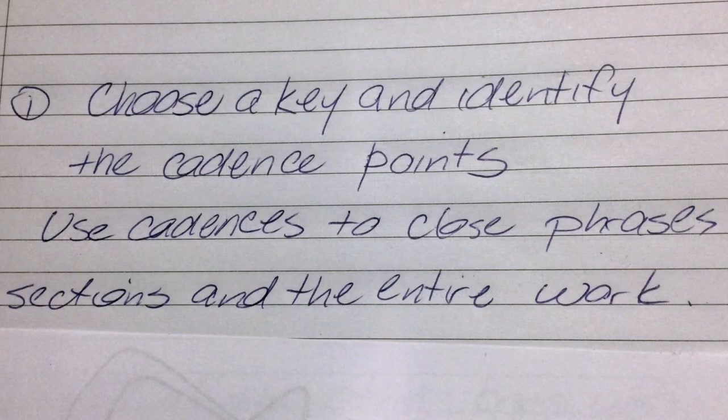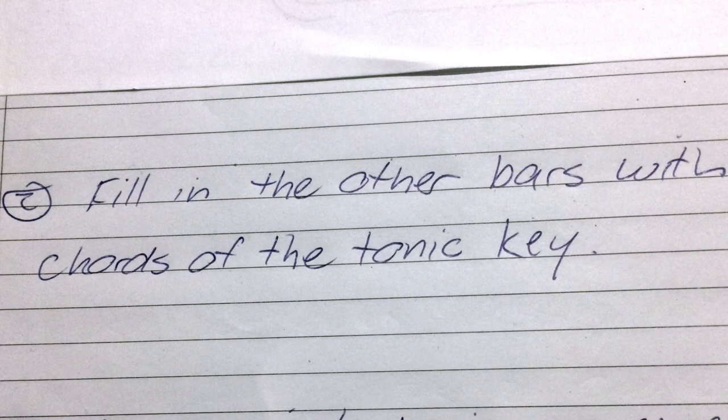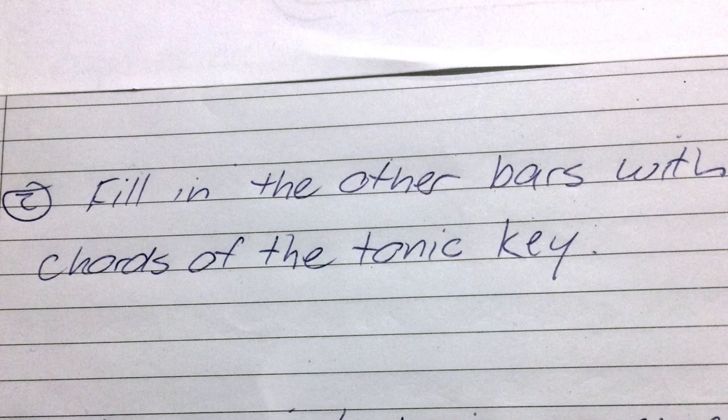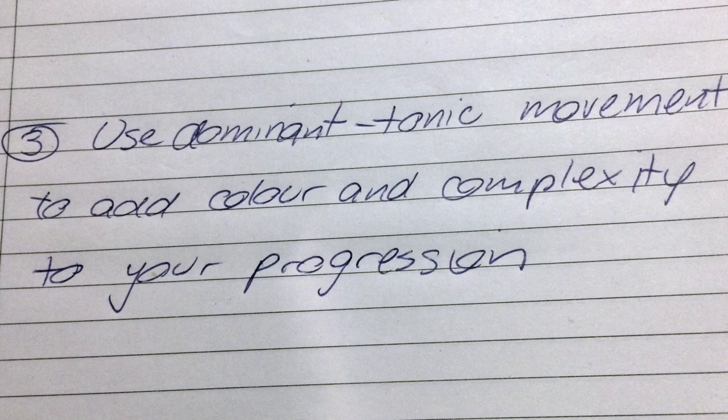So to recap the process that we have taken today. Number one, choose a key and identify the cadence points. Use imperfect and interrupted cadences to conclude phrases, and perfect and plagal cadences to draw sections and the entire piece to a close. Point two, fill in the other bars with chords of the tonic key. And point three, our final point, use dominant to tonic movement to add more color and complexity to your progression.